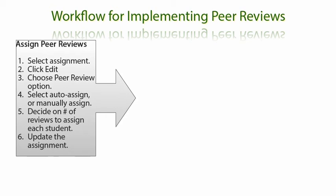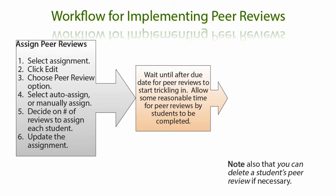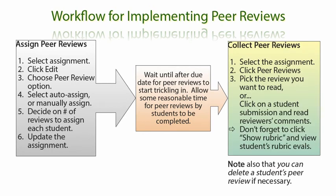First, you assign peer reviews as you edit an assignment. There are two ways to assign peer reviews: automatically or manually. After peer reviews are assigned, you should wait a reasonable period of time for students to complete their peer reviews. Then, this demonstration will walk you through the steps of collecting peer reviews by students. Note that you will be able to delete a student's peer review, if necessary.